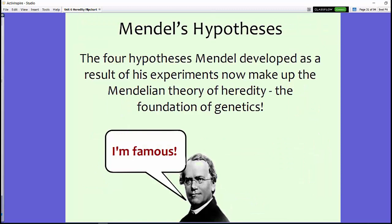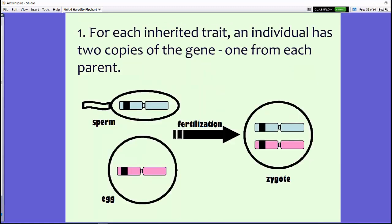Mendel came up with four hypotheses from his experiments, which now make up the theory of heredity — the foundation of genetics — and he did all of this without DNA. His first hypothesis: for each inherited trait, an individual has two copies of the gene, one from each parent. You get one version from mom and one version from dad, and when the egg and sperm come together they form the zygote.